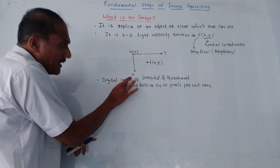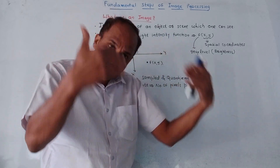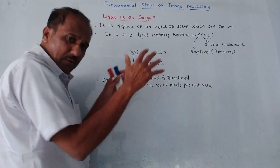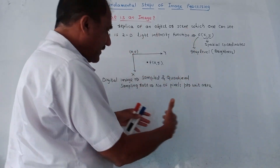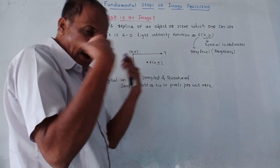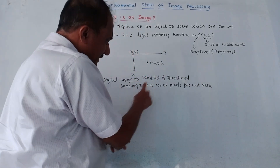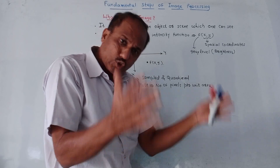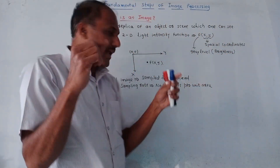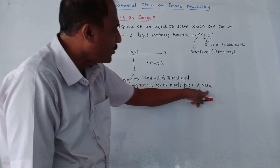Now, digital image. If you capture an image and perform sampling and quantization, then it is called a digital image. The sampling rate is the value or rate by which you perform sampling of an image. This sampling rate should be sufficiently large so that the maximum number of pixels of the captured image can be covered, and it corresponds to the number of pixels per unit area.